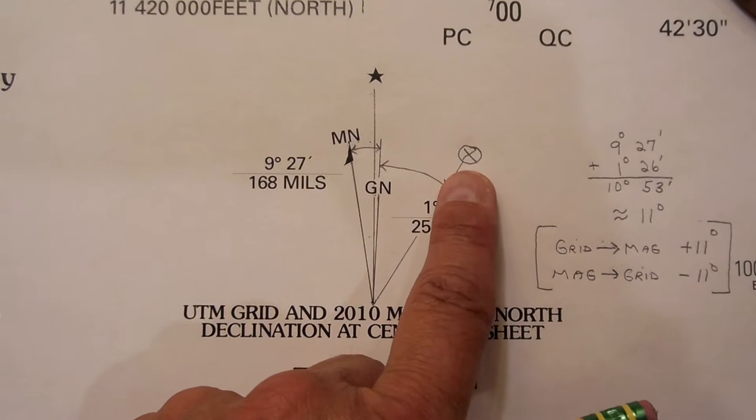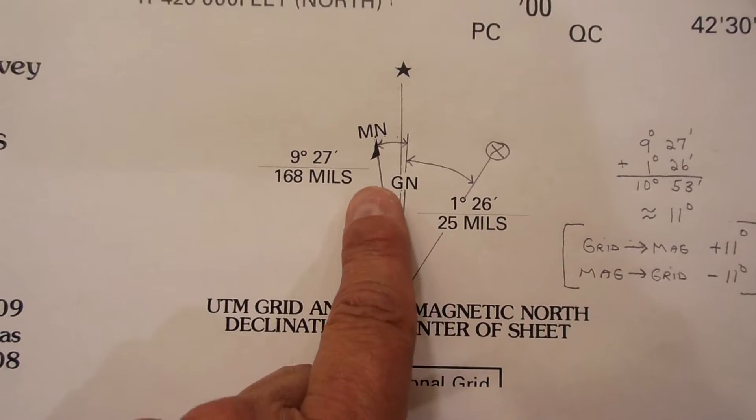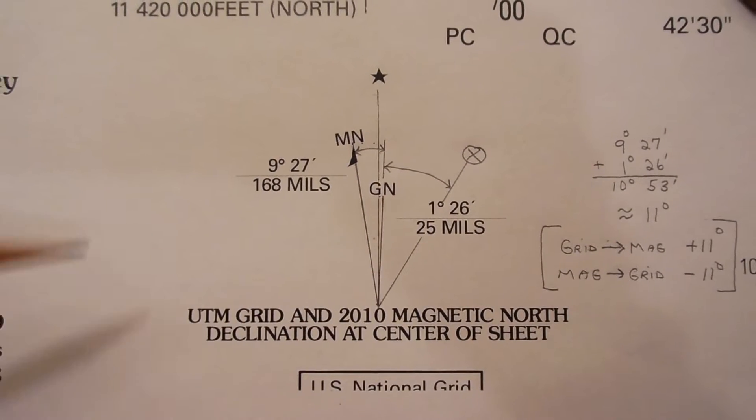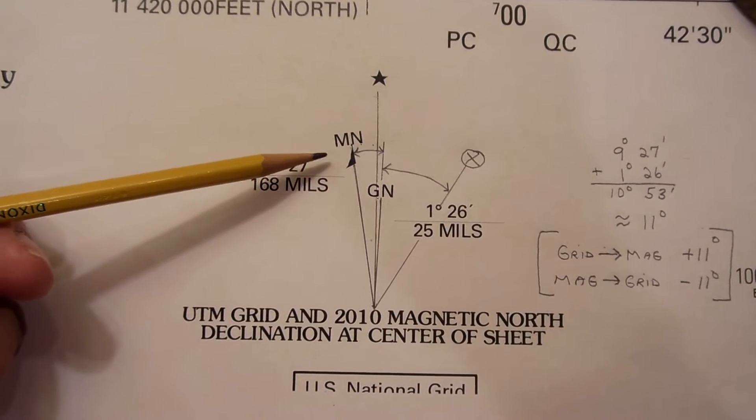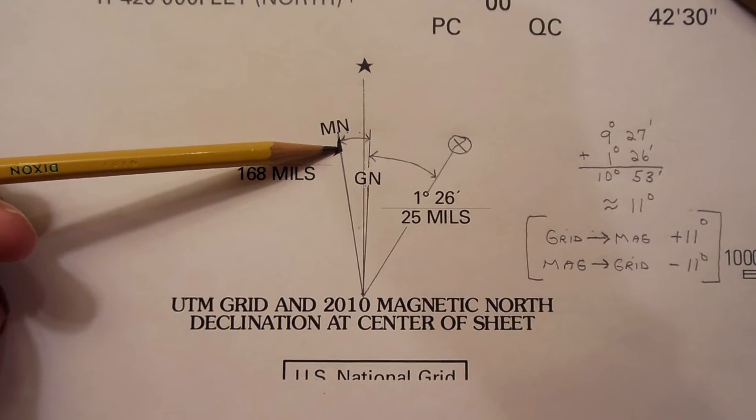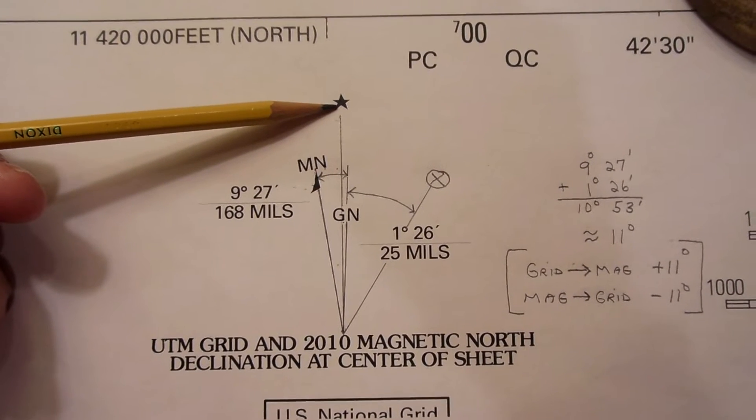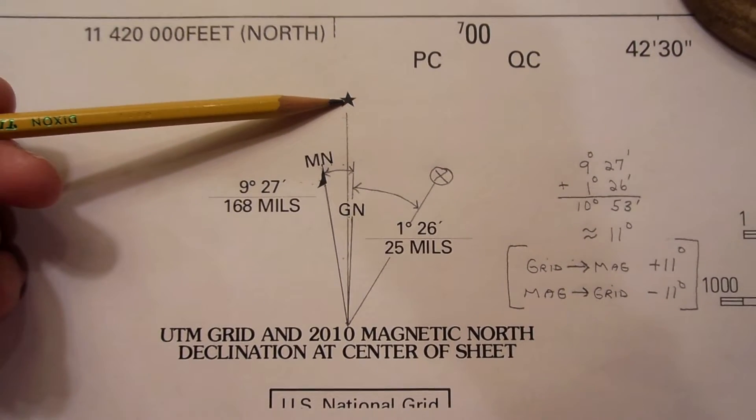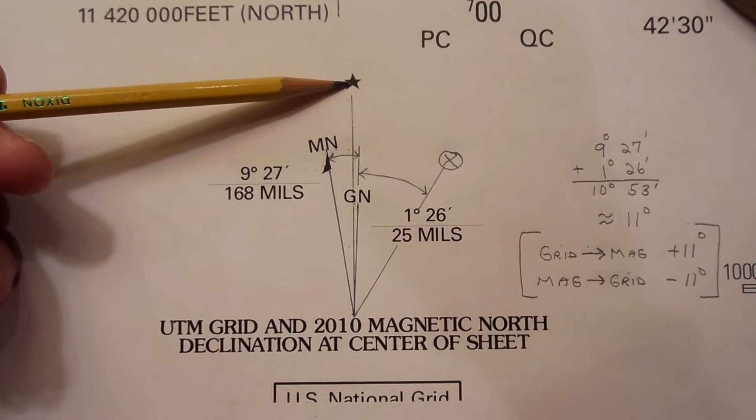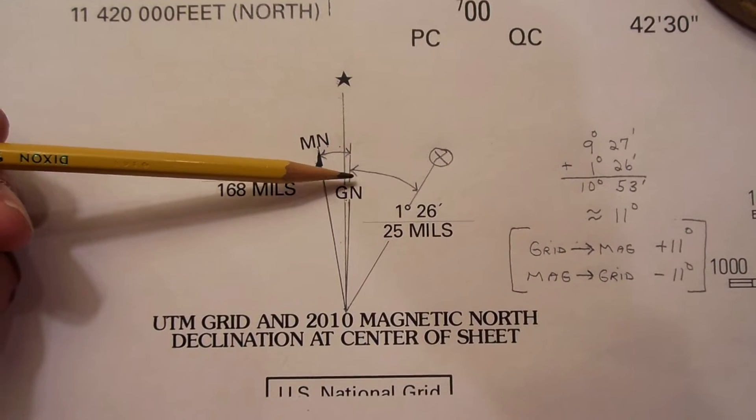It doesn't include this line. I drew this line in. You'll see why in a minute. But you've got these three lines drawn here. This one here with the arrowhead on it, that is magnetic north, MN. This line here with the star representing Polaris is true north. And this line here that says GN is grid north.